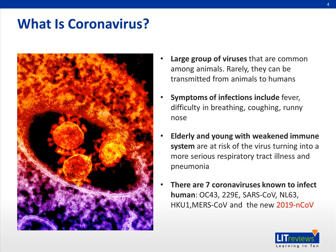Viruses are divided into families. Coronavirus is a family of viruses that mostly infect animals, but sometimes they can be transmitted to humans and cause disease. The symptoms usually involve fever, difficulty in breathing, coughing, and runny nose. The elderly and the young are more susceptible. There are currently seven coronaviruses known to infect humans. OC43 and 229E are considered old ones that have been associated with us for a long time. In 2002-2003 we discovered the SARS coronavirus, and after that we discovered NL63, HKU1, and the MERS coronavirus. And then this new 2019 novel coronavirus, which is responsible for the current outbreak.